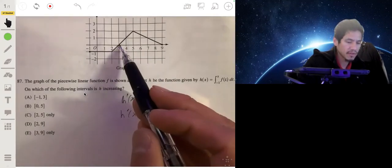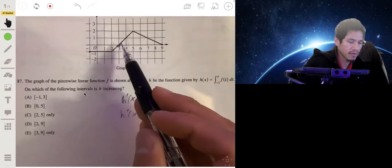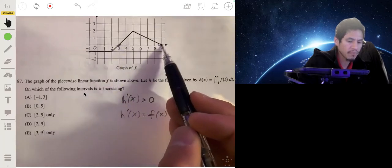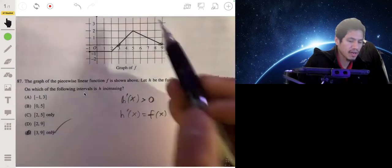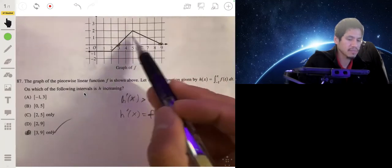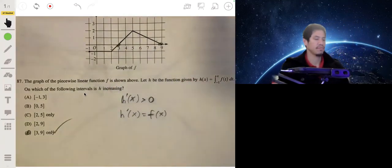And it's positive only from, or not only but from three to nine. So our answer is just E. We don't care that it's going up and down, we just care that it's positive. So just don't let that throw you off.